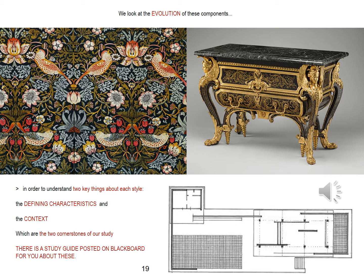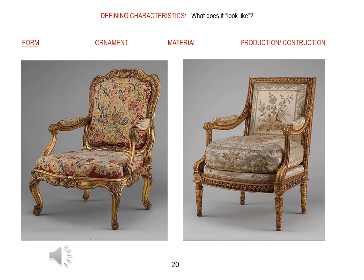We'll see how they evolved over time and come to understand them by analyzing them from various vantage points. But while there are many points of view in the prism, they all fall under one of two categories: defining characteristics and context. I've provided a handout in the study guides about these two cornerstones of this course. Defining characteristics are what make the object or space look the way it does. They answer the question: what does it look like? And if you don't know where or how to begin identifying them, look to these four areas: form, ornament, material, and production/construction techniques.